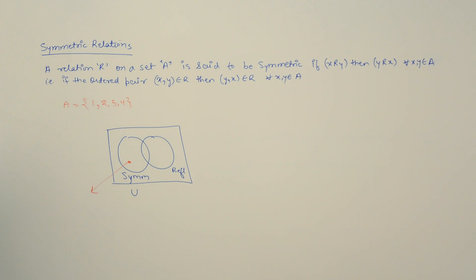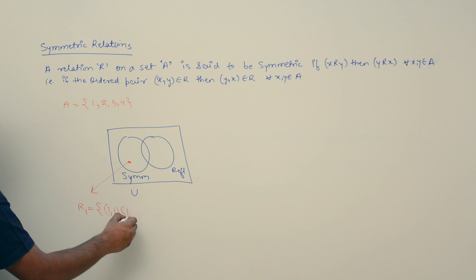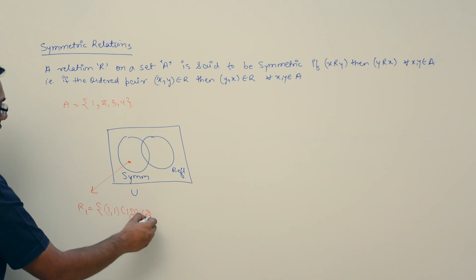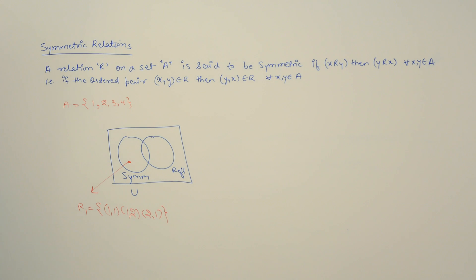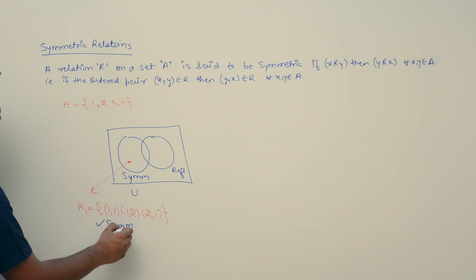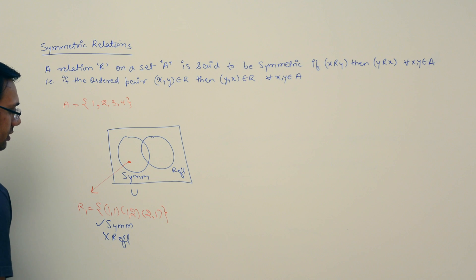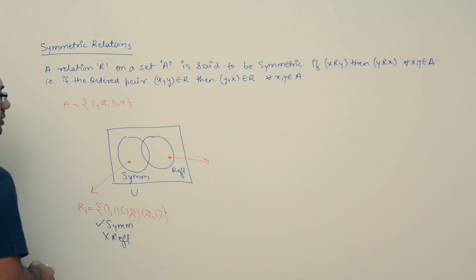For a relation that is symmetric but not reflexive, consider R1 = {(1,1), (1,2), (2,1)}. This relation R1 is symmetric but it is not reflexive. This corresponds to the symmetric-only region of the Venn diagram.